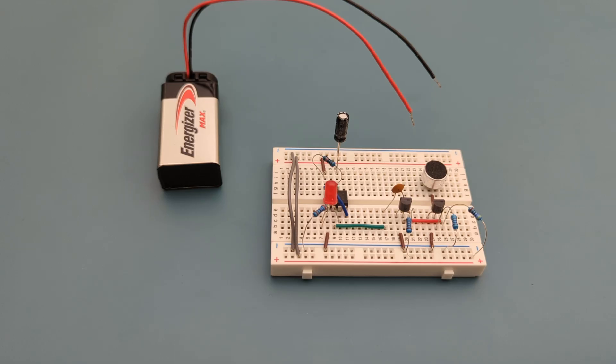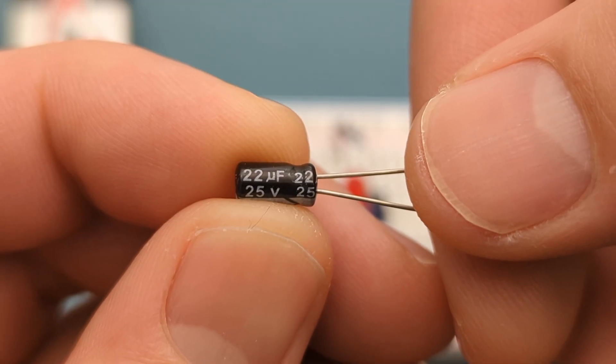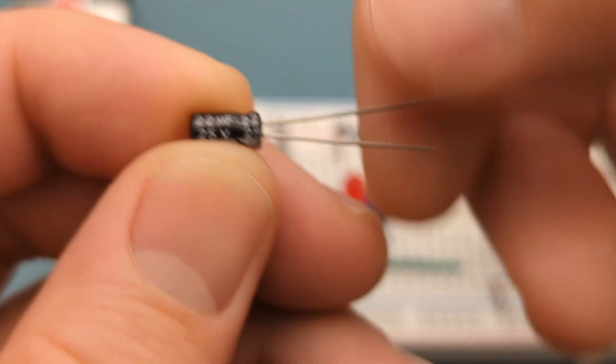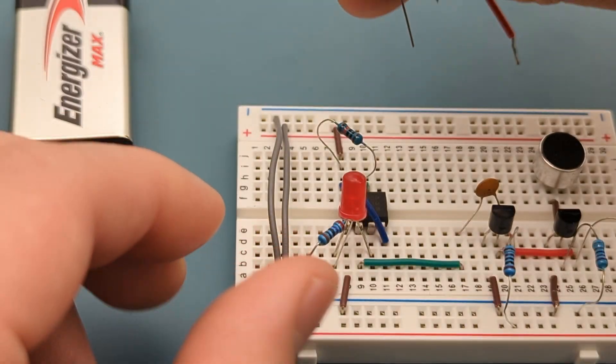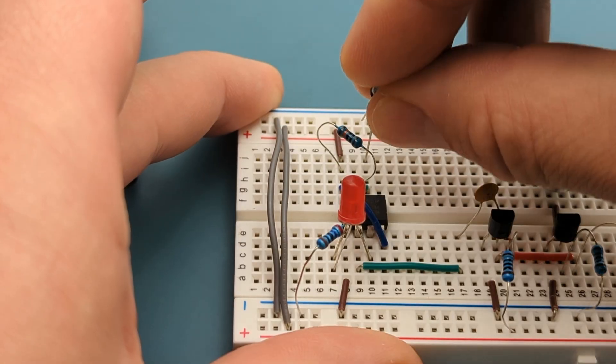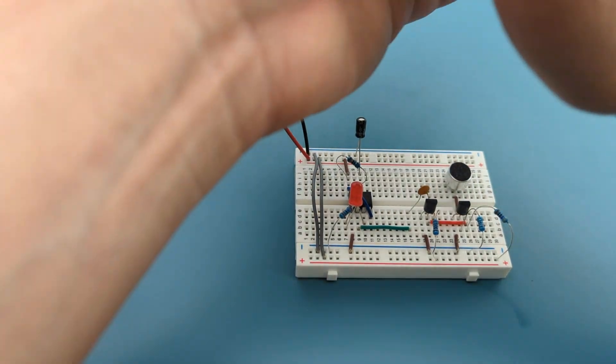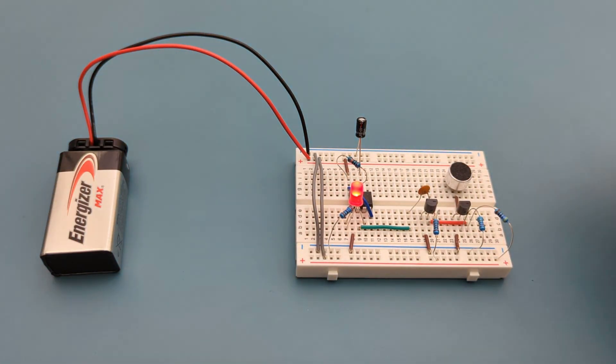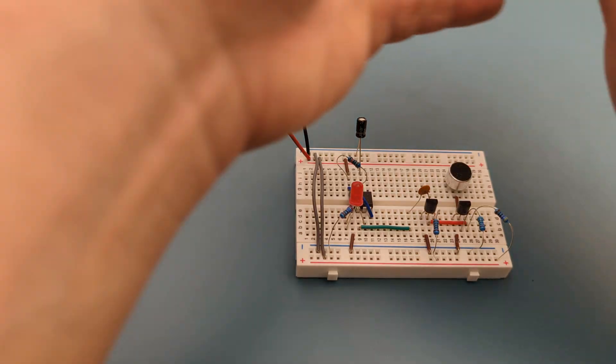If you want to reduce the duration, replace this capacitor. For example, to reduce the duration from around 5 seconds to 2.5 seconds, replace the 47 microfarad capacitor with a 22 microfarad capacitor. As you can see, the LED turns off in about 2.5 seconds.